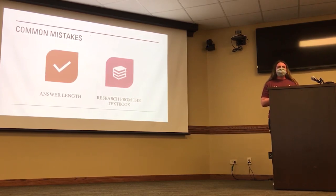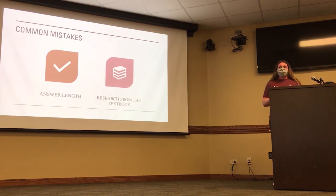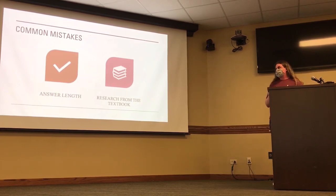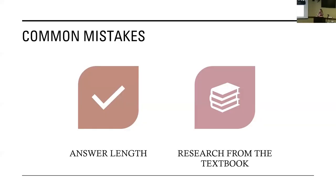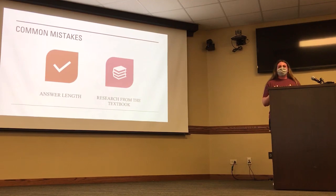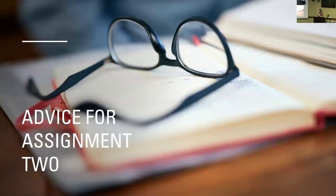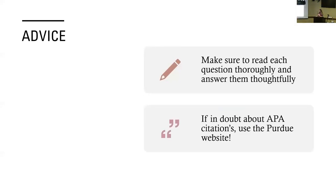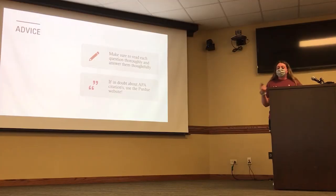Some more common mistakes: answer length. Question four, where you had to connect specific research studies to the article you read — that typically would be the longest answer. Some people only wrote a couple sentences, which obviously doesn't give enough information. For the summary part, pretend that somebody is reading what you wrote who hasn't watched or read the article — that way they really know what exactly happened, and make sure you include key points. Also, a lot of people didn't put any research from the textbook, so I took away a lot of points because that was really the big focus.